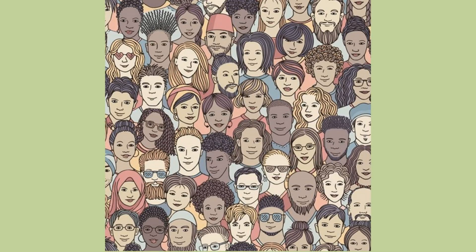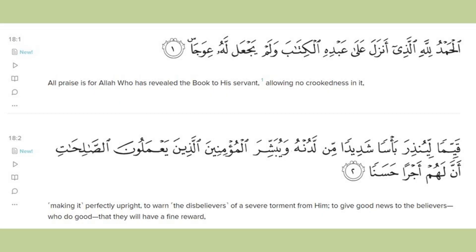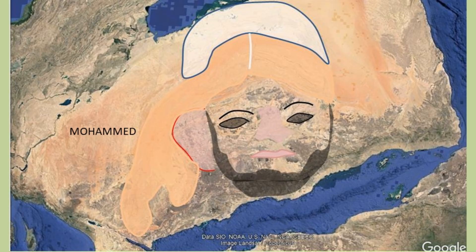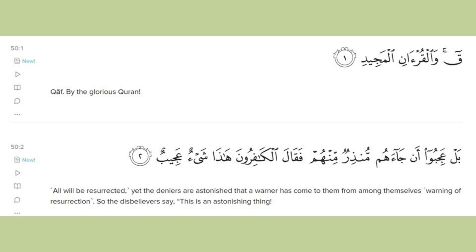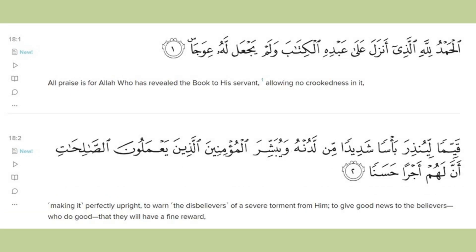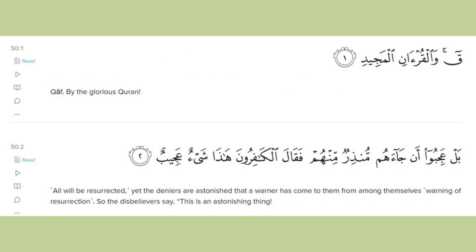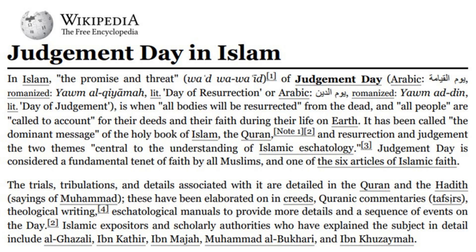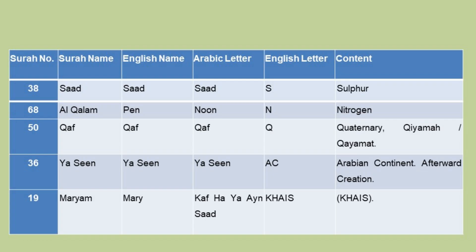Today, let me correct an error that people are unknowingly committing. A few people are falsely reading chapter 18, Al-Kahf, on Fridays, thinking the Prophet Muhammad told them to read it. In fact, the Prophet Muhammad told people to read Surah 50, Khaf, but people are mistakenly reading the incorrect surah. Surah 18 Al-Kahf is related to different topics, whereas Surah 50 Khaf explains about the Hyama which comes at the end of the Quaternary, explaining events that will take place during the end times.